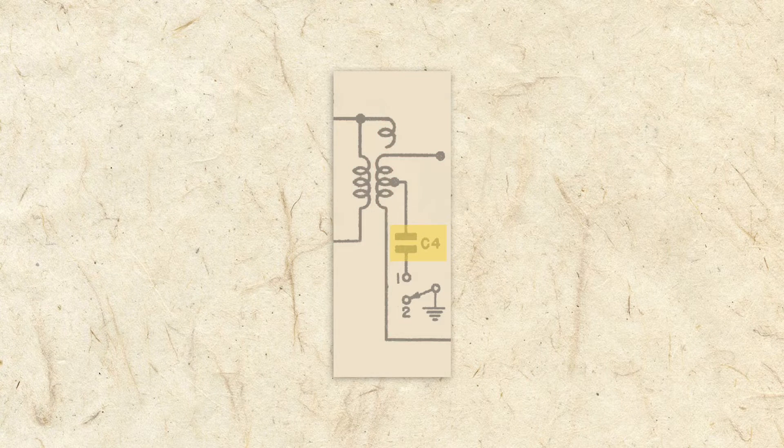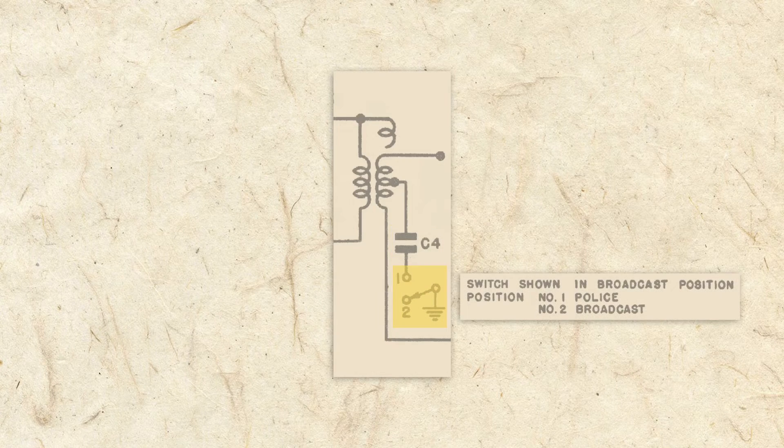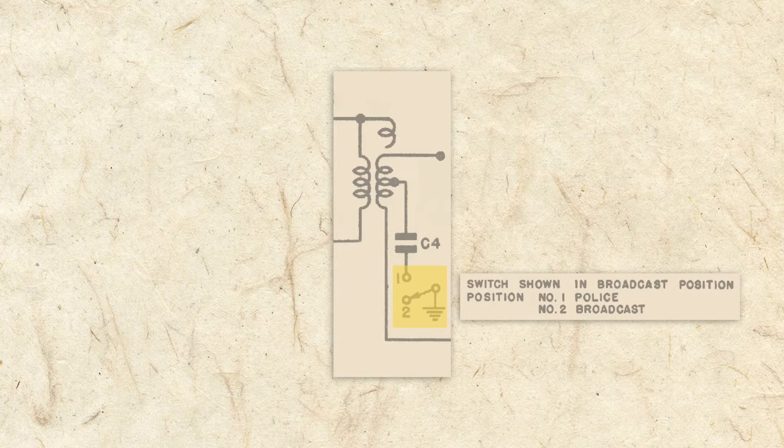The shortwave circuit uses capacitor C4 to shift the frequencies to the higher band, and a switch selects either the AM coil or the shortwave coil. The switch is accessible from the back of the radio.